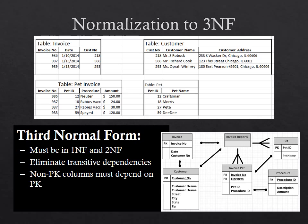Now let's look at the third normal form. To meet its rules, your data must meet all the rules for both the first normal form and the second normal form. The third normal form deals with a concept known as transitive dependencies. Essentially this means that if a non-primary key column depends on another non-primary key column, you have a transitive dependency and the table should be split apart. Notice that in the pet invoice table the amount is really dependent upon the procedure — that is a transitive dependency and it should be removed to a separate table.